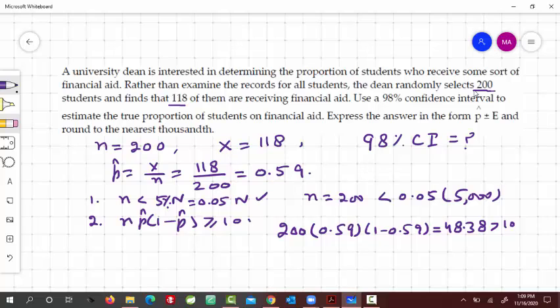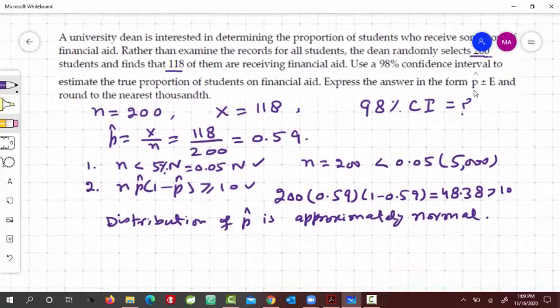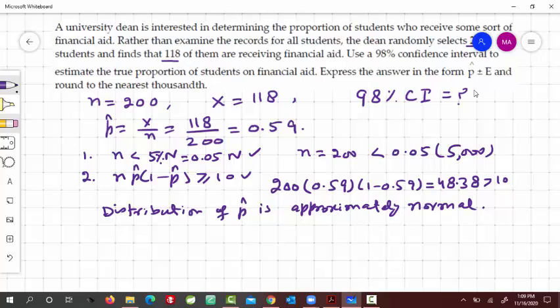So this condition is also true, which means that the distribution of p hat is approximately normal. So we have to find this one, p hat plus minus e. So p hat we already have it here, right, so this is p hat, and now we have to find e, and e is the margin of error, so that is given by